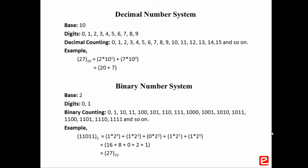Binary counting starts from 0, 1, 10, 11, 100, 101, 110, 111, 1000, 1001, 1010, 1011, and so on.